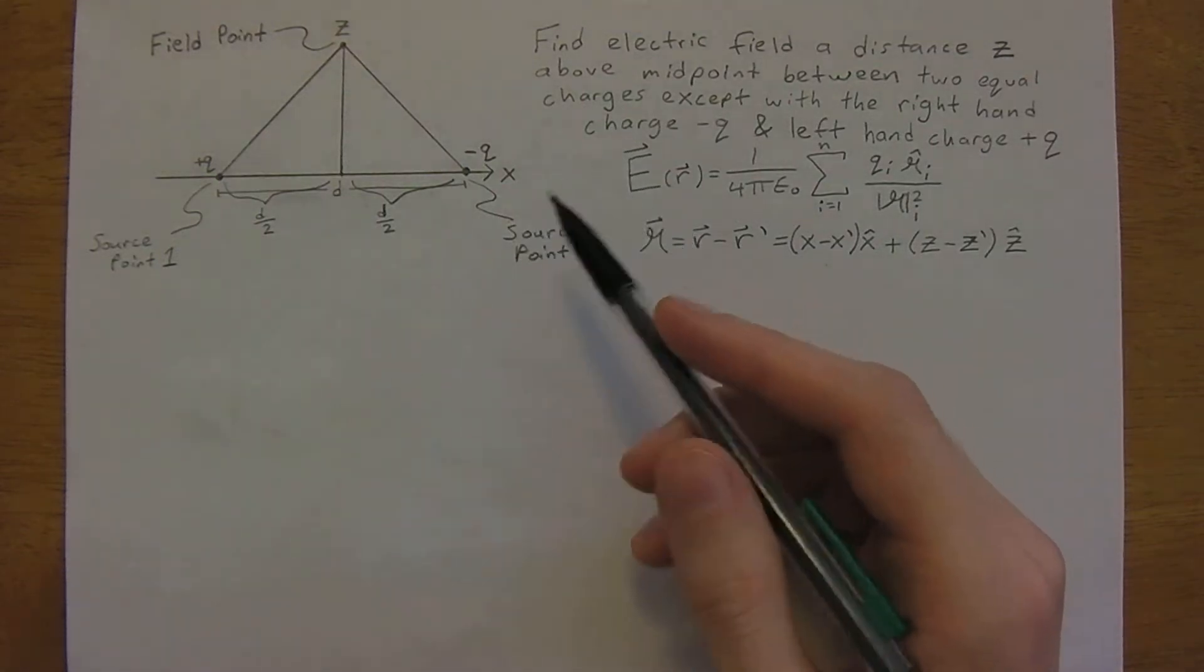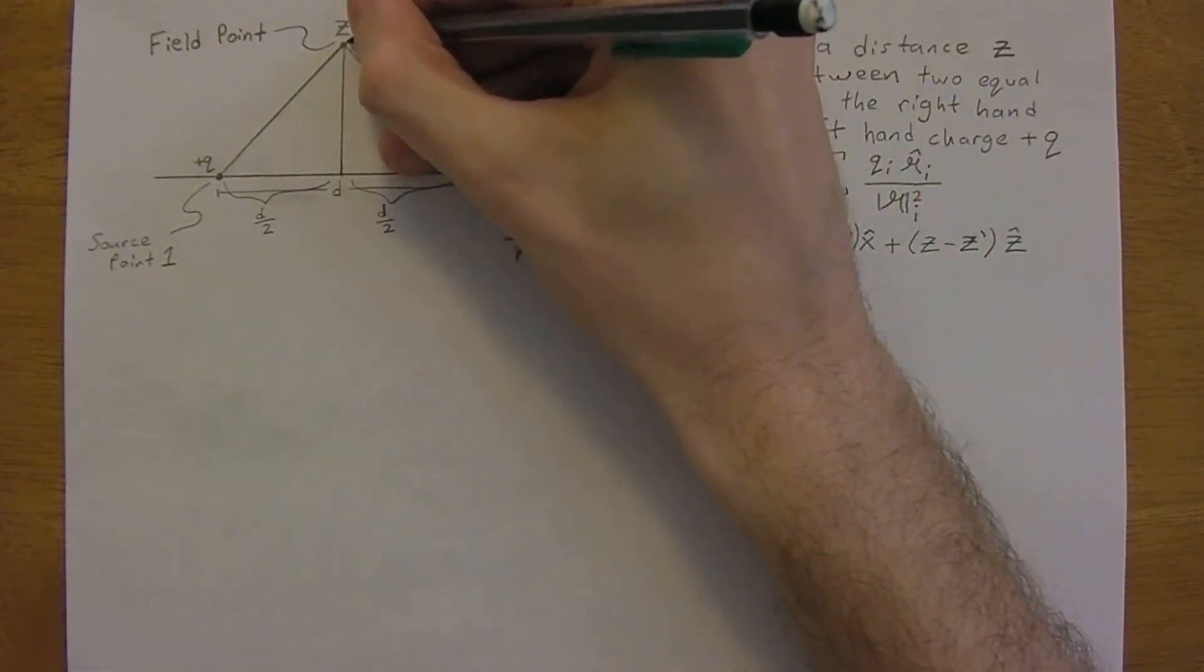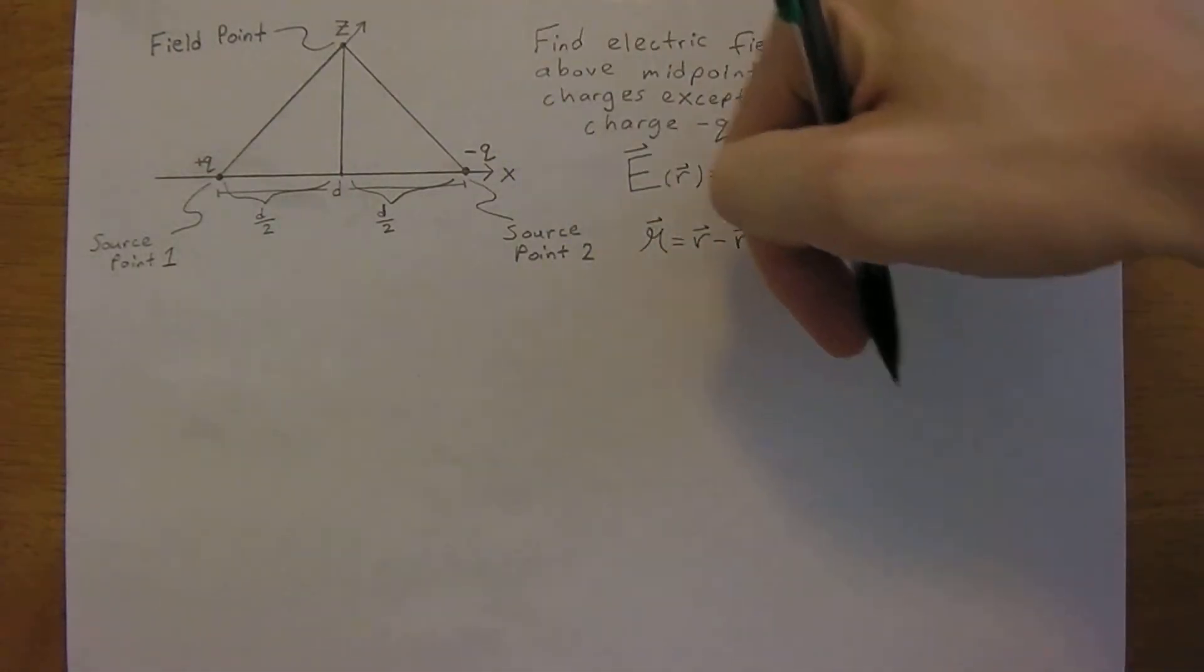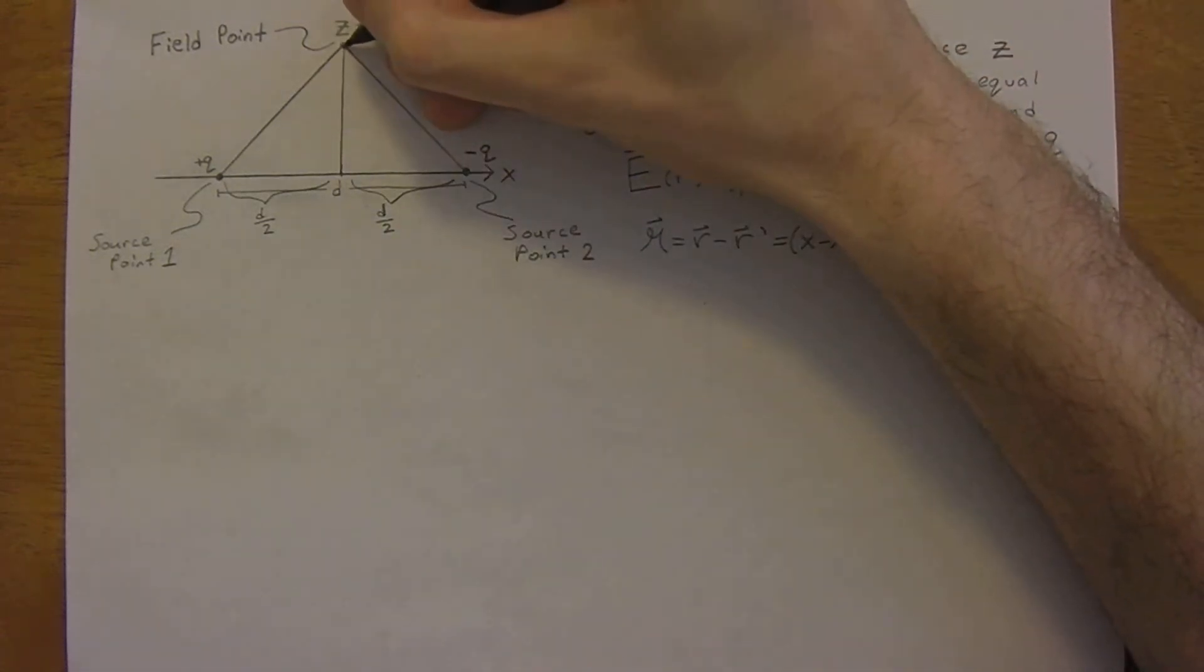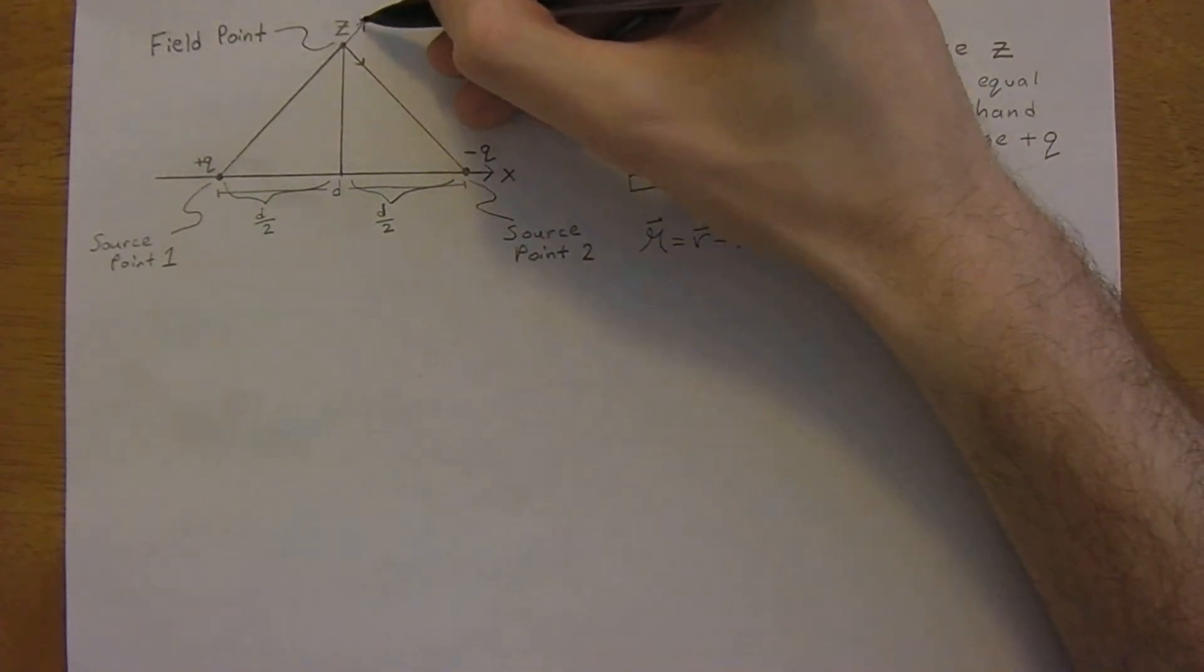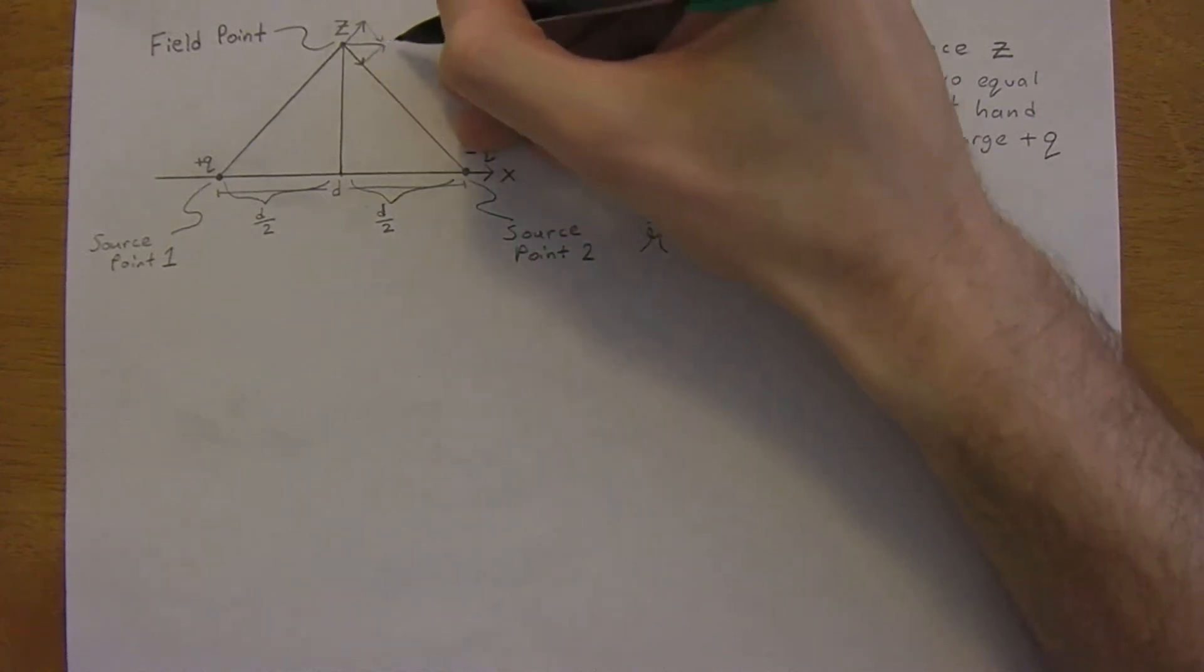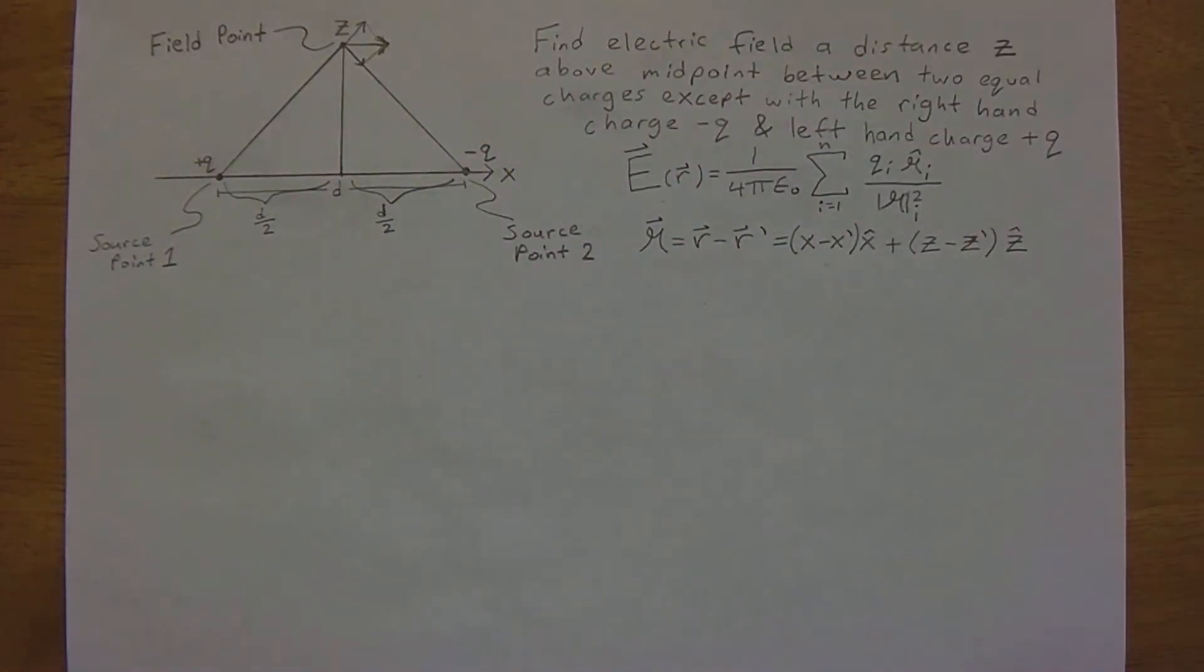So just by intuition, you know that the electric field from a positive charge will give a field going up like this. And for a negative, the field is going to be directed towards the negative charge, so it will be coming down like this. And so we'll end up, when we add these two vectors together, with a field coming out to the right along the x-axis in the positive direction.